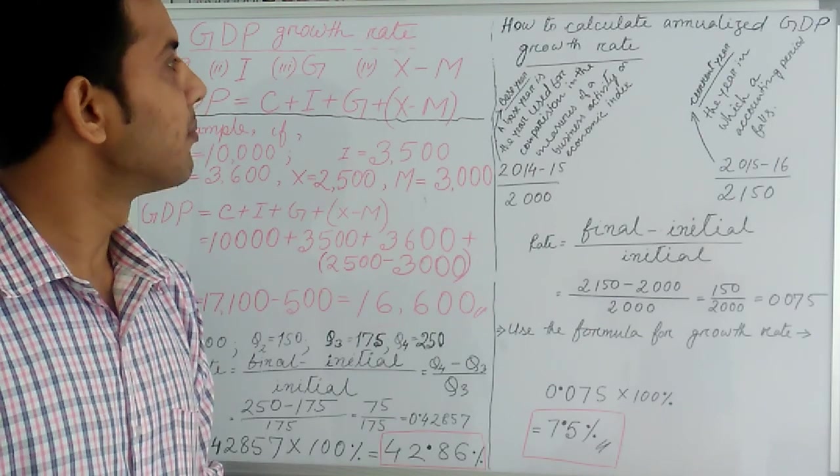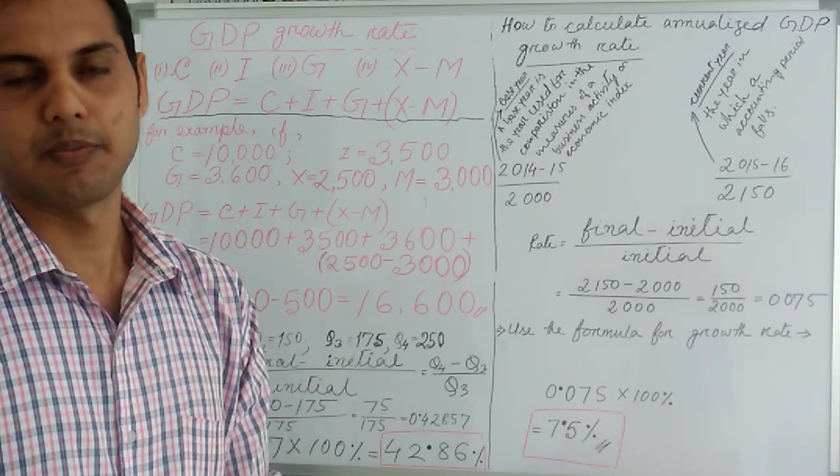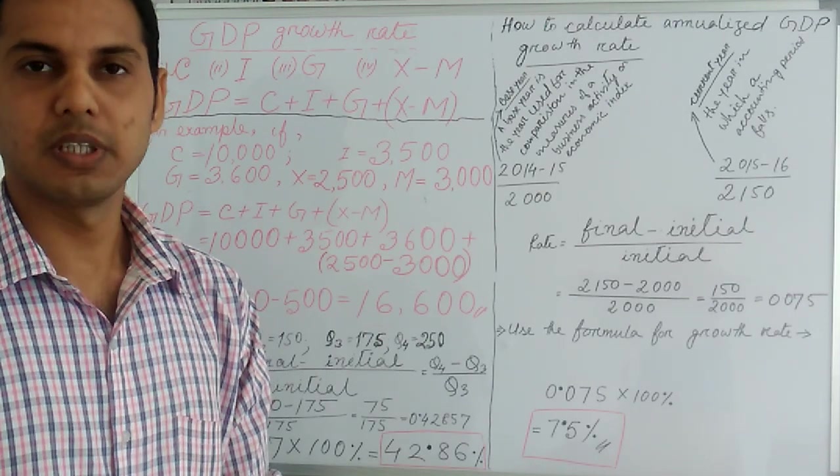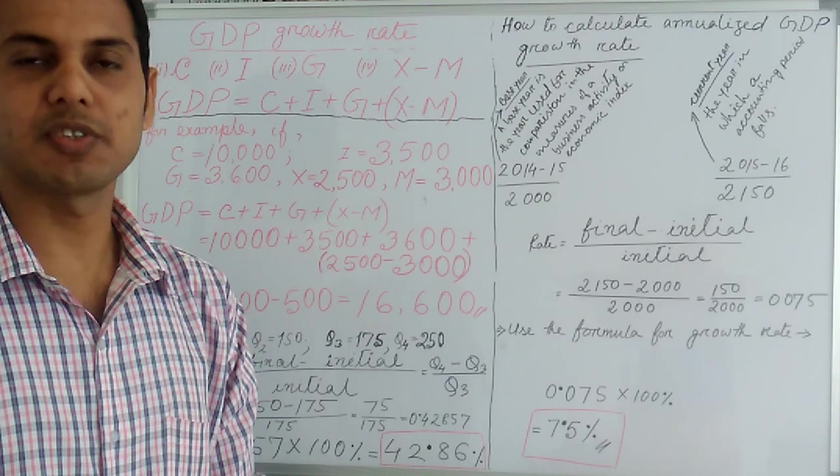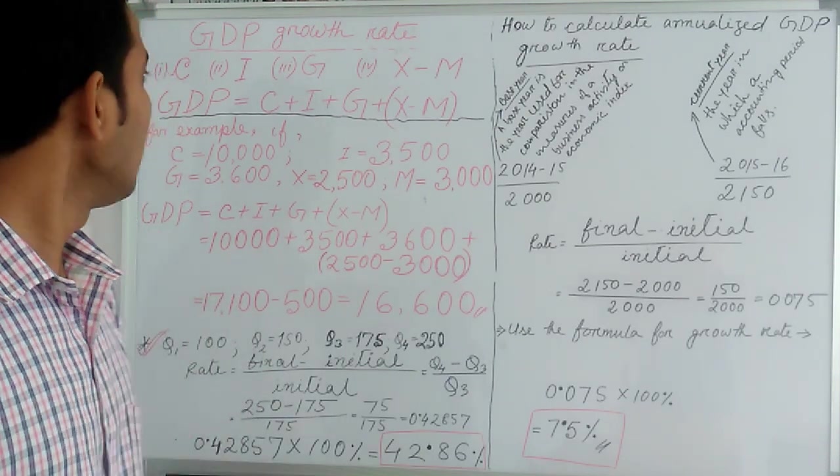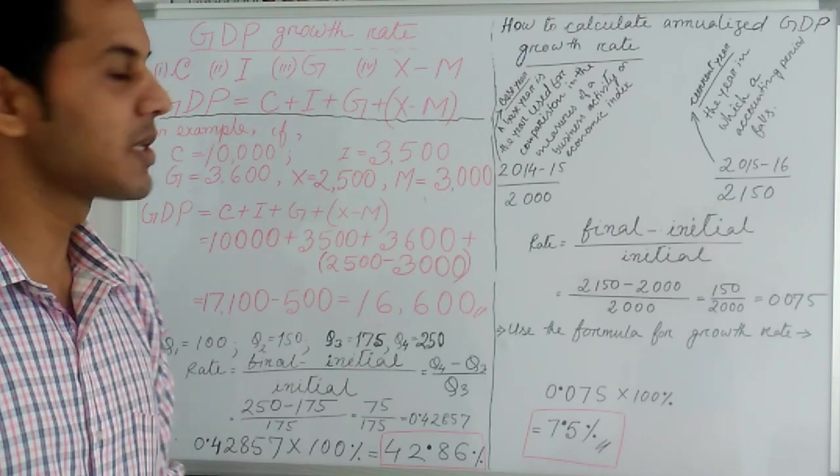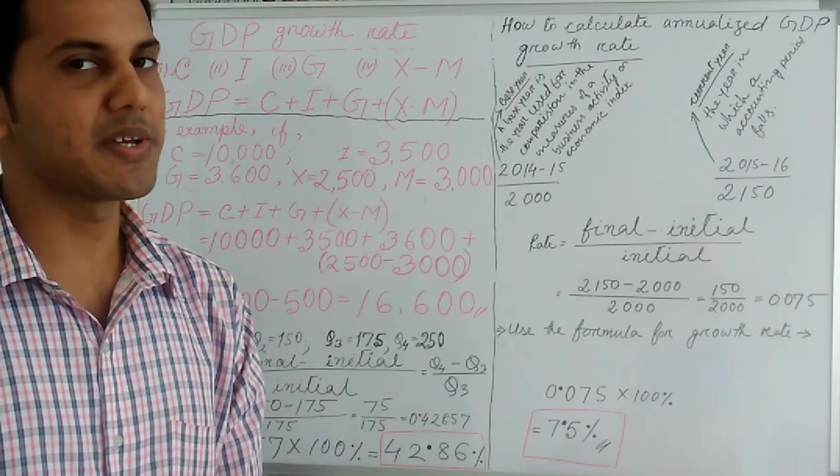Number four, X minus M, denotes net trade. Exports add to GDP while imports subtract from GDP. So GDP equals C plus I plus Z plus X minus M.